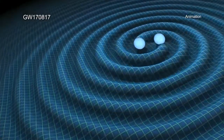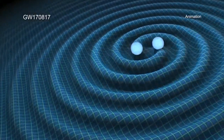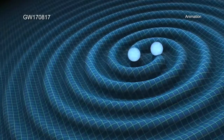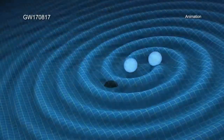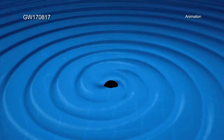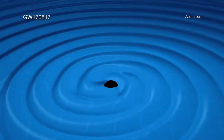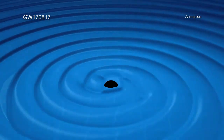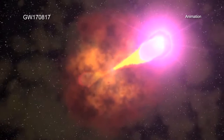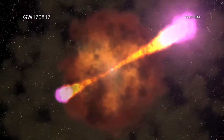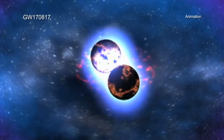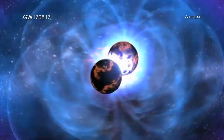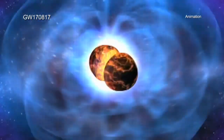The gravitational wave source GW170817 was detected with the Advanced Laser Interferometer Gravitational Wave Observatory, or LIGO, at 8:41 a.m. EDT on Thursday, August 17, 2017. Two seconds later, NASA's Fermi gamma-ray burst monitor detected a weak pulse of gamma rays. Later that morning, LIGO scientists announced that GW170817 had the characteristics of a merger of two neutron stars.